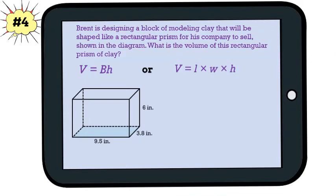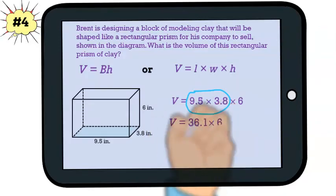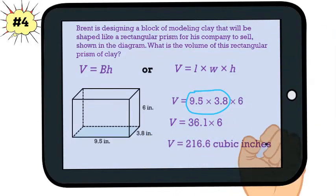Next, let's substitute our numbers in. When we multiply the first two numbers, we get 36.1, and when we multiply this by 6, we get our volume of 216.6 cubic inches.